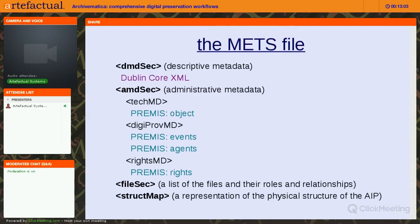Looking at the METS file: you have a section for descriptive metadata — Simple Dublin Core that you either create in Archivematica through a template or include with your contents. We have administrative metadata, which brings in PREMIS preservation metadata about the objects, technical information, information about all events and microservices that occurred, agents including people and open source tools doing the processes, and PREMIS rights and restrictions. Our file section lists all files with their roles and relationships, and the struct map is a representation of the physical structure of the AIP.